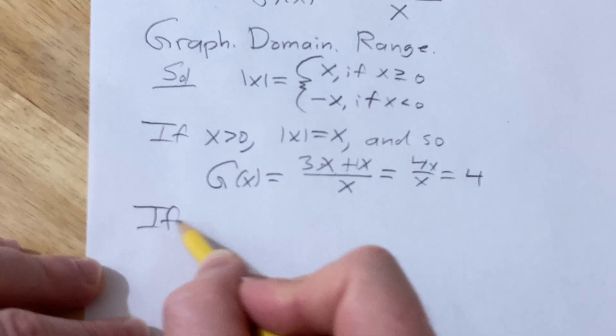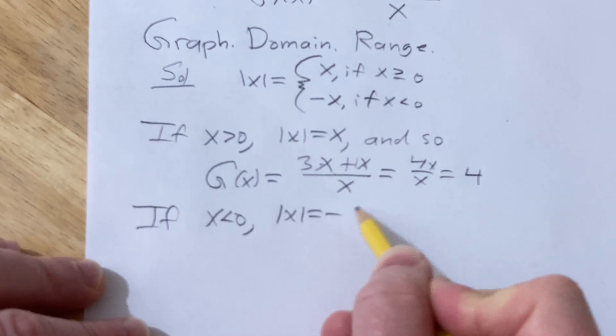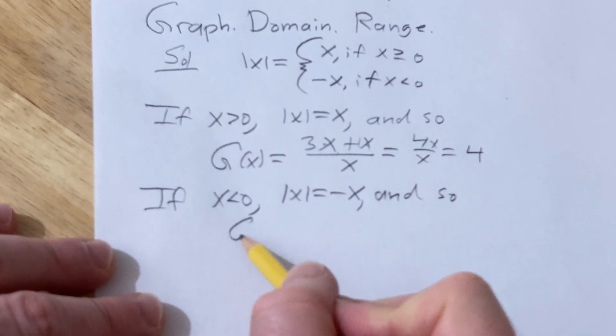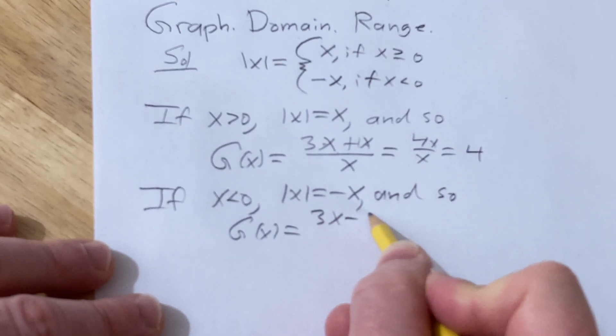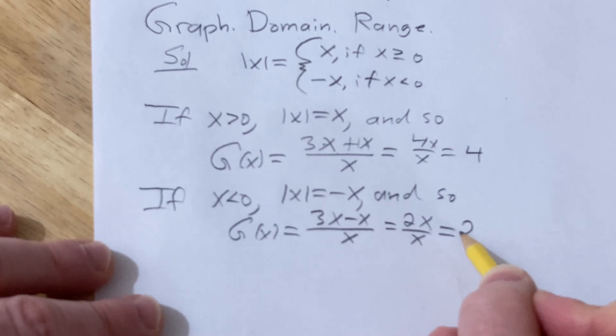If x is less than 0, the absolute value of x is minus x. So G(x) equals 3x minus x over x, which is 2x over x, which is 2.